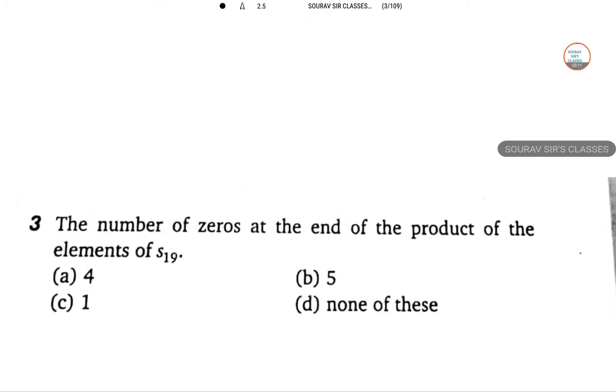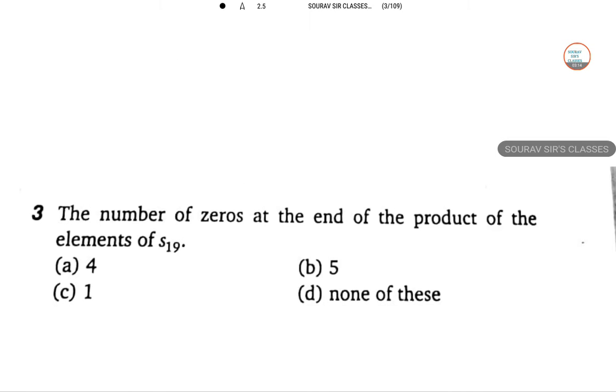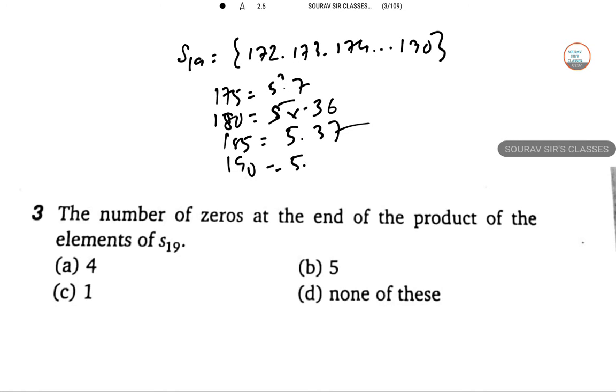Next question. The number of zeros at the end of the product of the elements of S19. So S19 is actually 172, 173, 174, dot dot dot, 190. So 175 will be 5 square into 7, 180 will be 5 into 36, 185 will be 5 into 37 and 190 is 5 into 38. So the number of 5s contained in the product of the element of the set is 5.